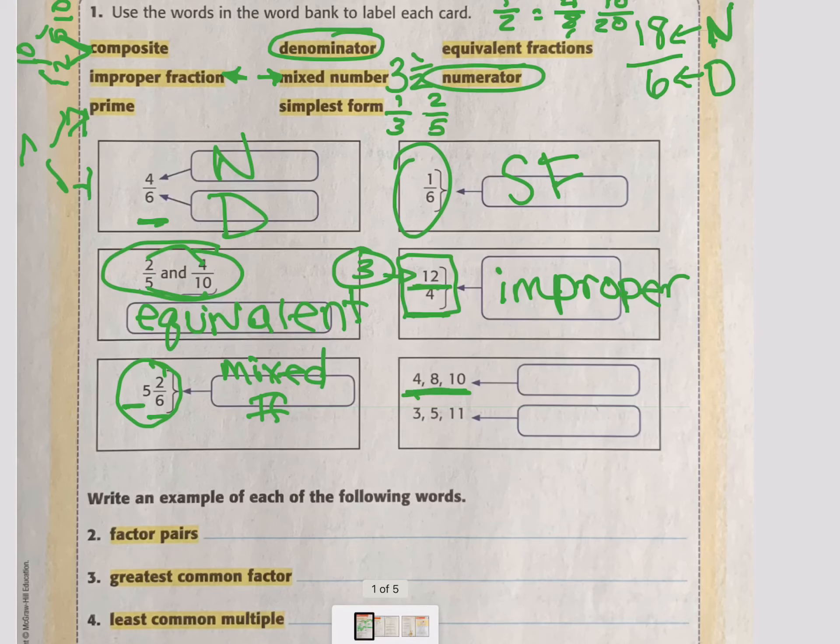All right. 4, 8, 10. Well, 4, I can divide by 1. I can divide by 4. I can divide by 2. 8's also divisible by 2. 10 is even. So that makes those numbers composite. But now we have 3, 5, and 11. Well, 3, I can only divide by 1 and 3. 5 is only 1 and 5. And 11 is only 1 and 11. So those are prime.